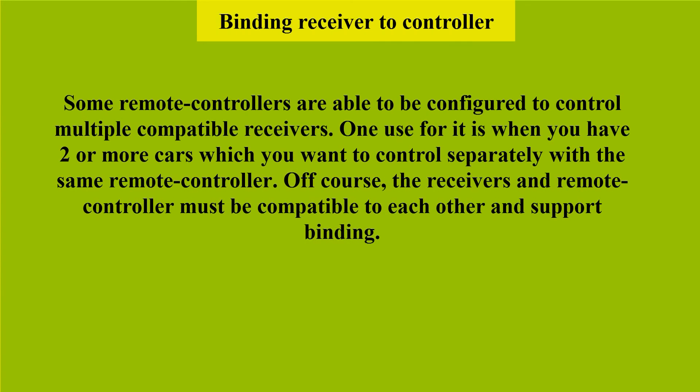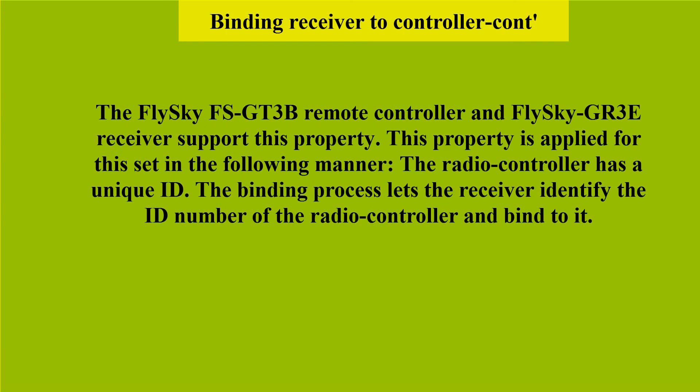Some remote controllers can be configured to control multiple compatible receivers. One use for this is when you have two or more cars which you want to control separately with the same remote controller. The receivers and remote controller must be compatible and support binding. The Flysky FS-GT3B remote controller and Flysky GR3E receiver support this property. The radio controller has a unique ID, and the binding process lets the receiver identify that ID number and bind to it.